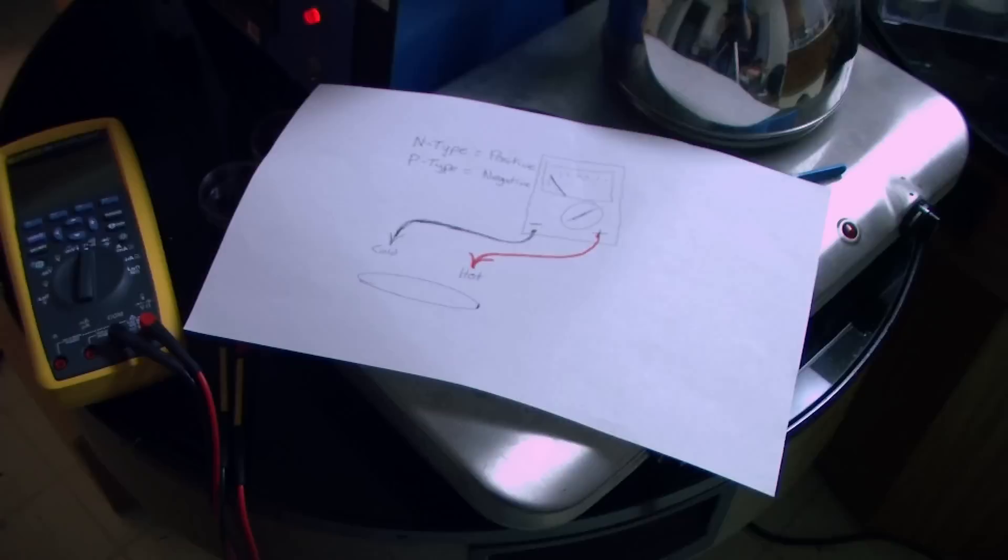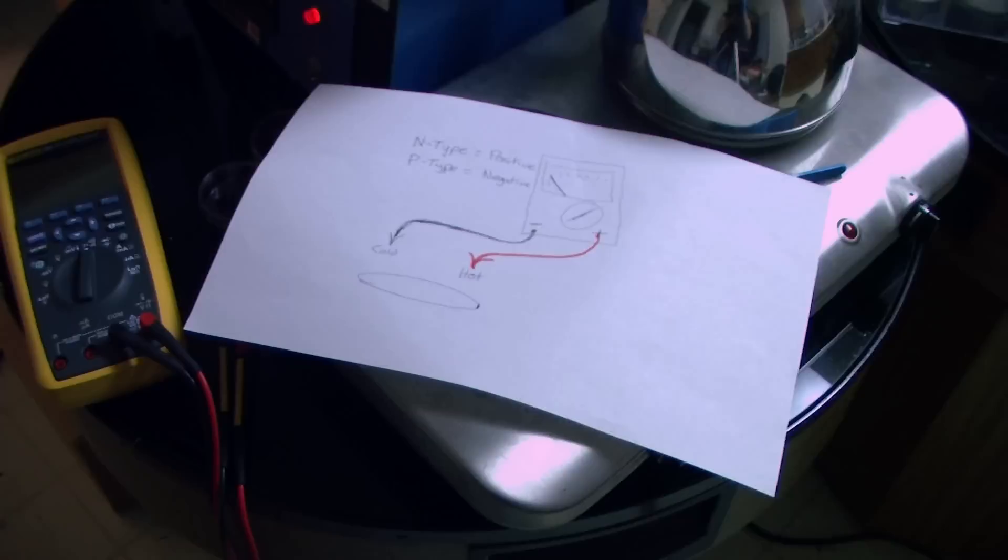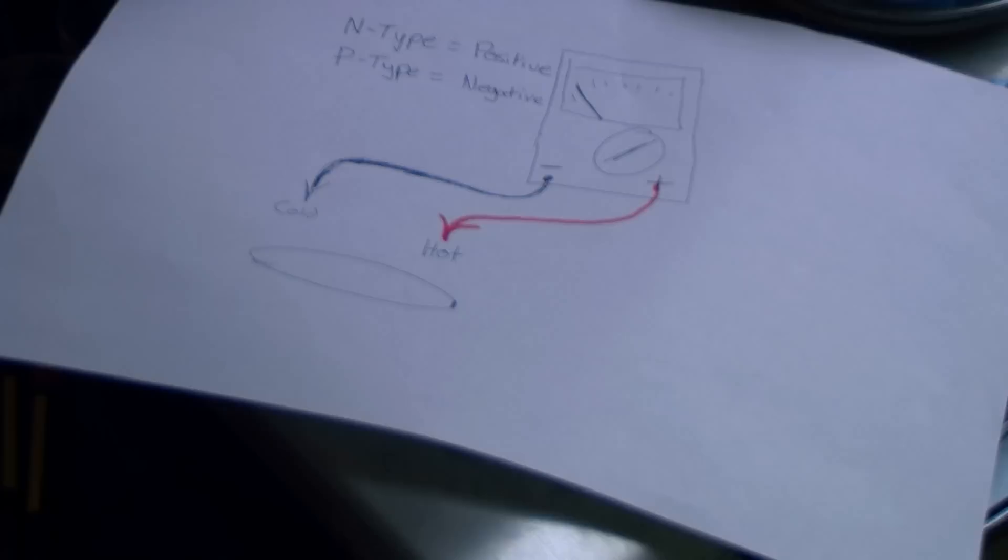All right. So first step, we're going to do a hot probe test on a wafer that I'm going to cleave. I'm going to try cleaving up a 100 P-type wafer, and I'm going to confirm that using a volt-ohm meter and a hot point probe. So once I get that set up, I'll record that.